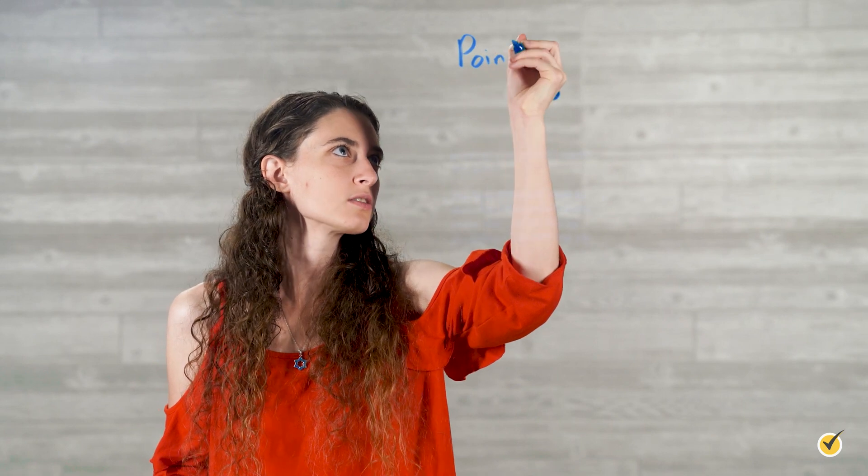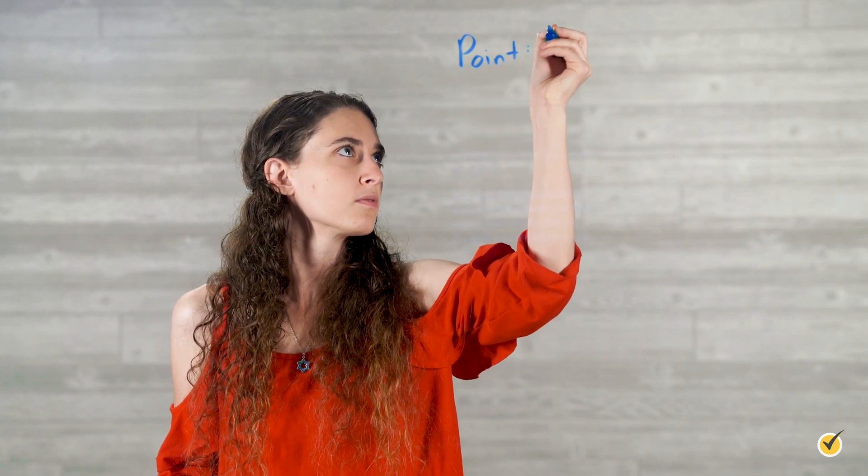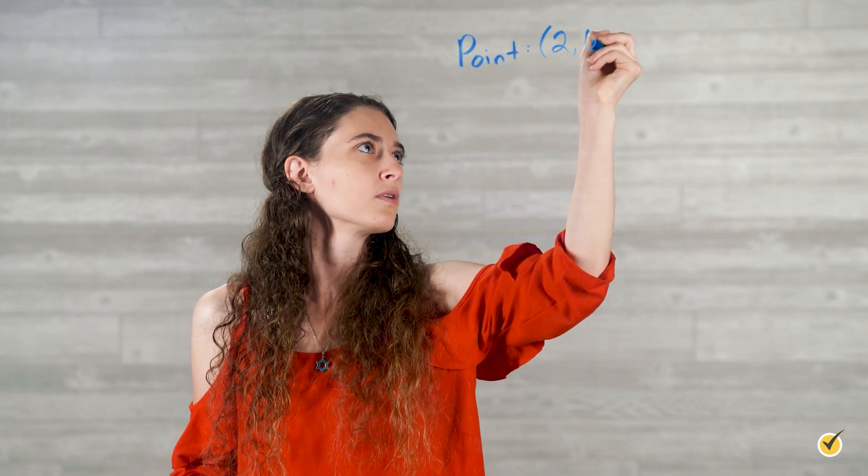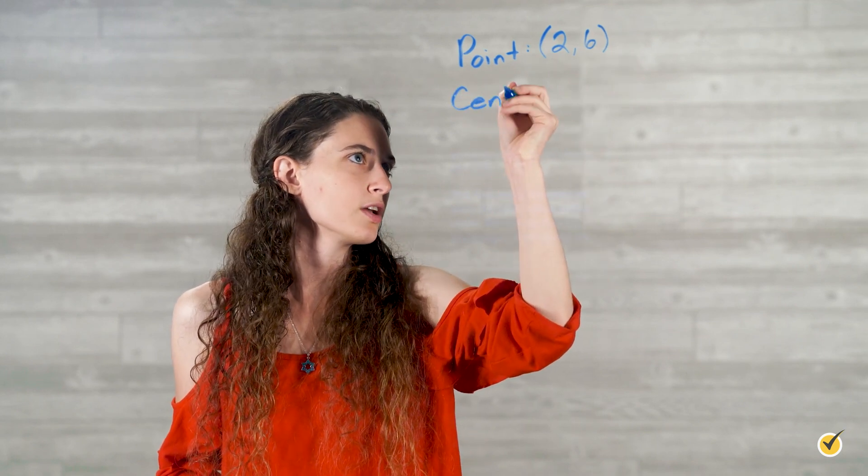If we're given the center of a circle and one other point, can we find three other points on a circle? Let's do an actual problem to see how we should get this done. Find at least three other points on a circle that has a point at (2, 6) and its center at (-2, 3). So our point is going to be at (2, 6) and our center is at (-2, 3).